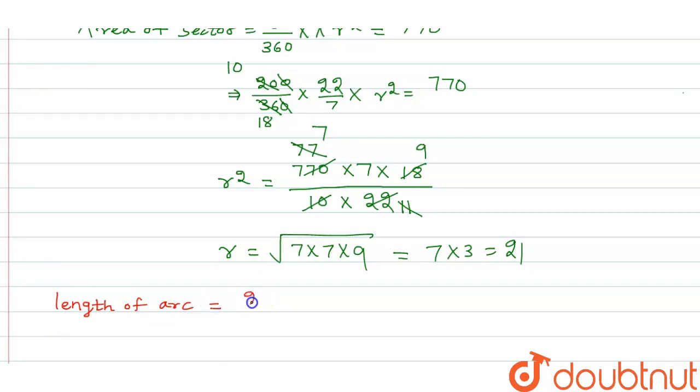Theta upon 360 into 2 pi r, that is 200 upon 360 into 2 into 22 by 7 into r is 21. So this is 3...